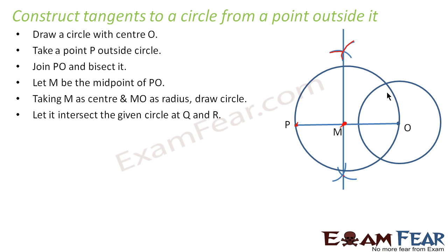Now you have got two points like this. This intersects the other circle at two points. And let us have these two points and let us name this Q and R.